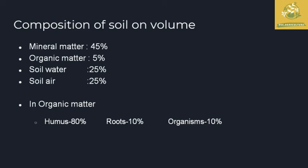Regarding the composition of soil by volume, soil contains approximately 45 percent mineral matter, 5 percent organic matter, 25 percent soil water, and 25 percent soil air. Within the 5 percent organic matter, around 80 percent is humus, 10 percent is roots, and 10 percent is organisms, which are the microbes present in the soil.